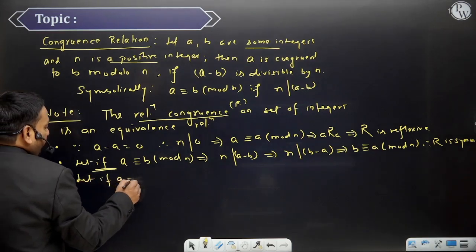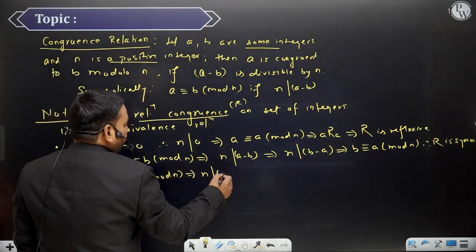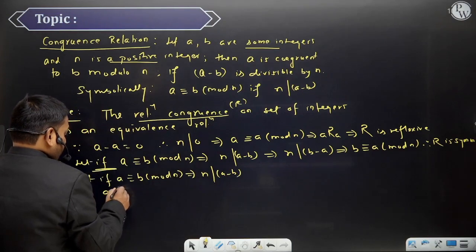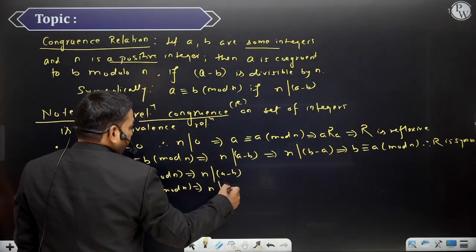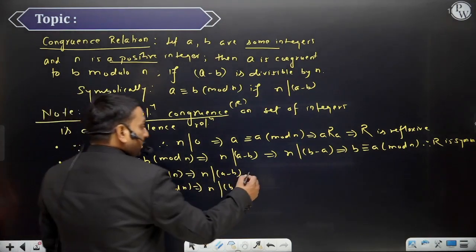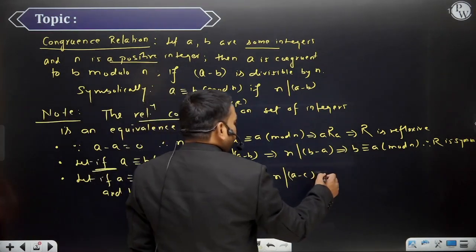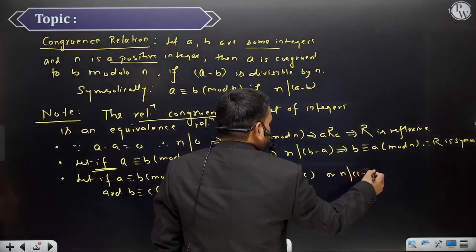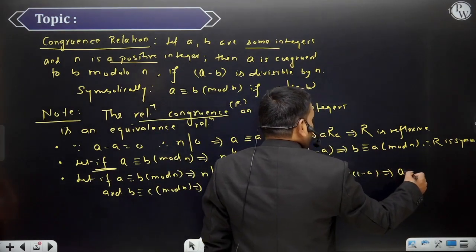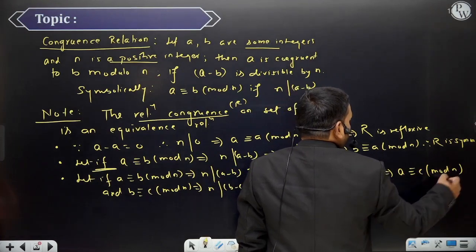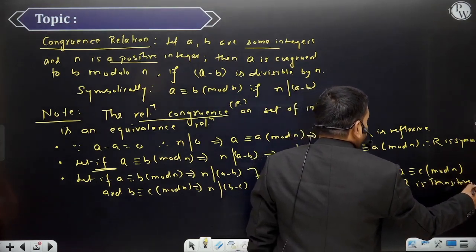Similarly, let if A is congruent to B modulo N - this implies N divides A minus B. And B is congruent to C modulo N - this implies N divides B minus C. This whole implies N divides A minus C or C minus A. So this implies A is congruent to C modulo N. So R is transitive as well.